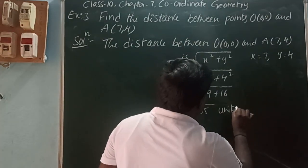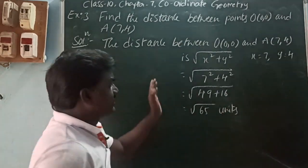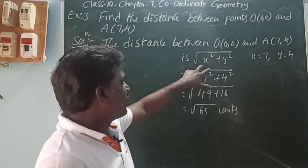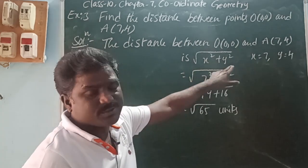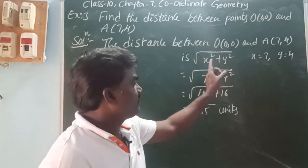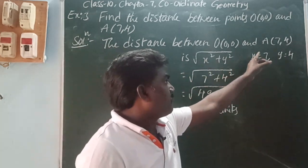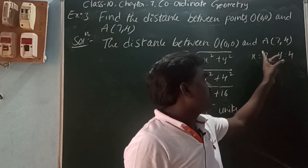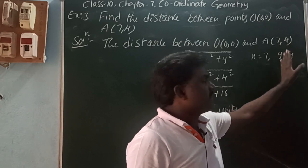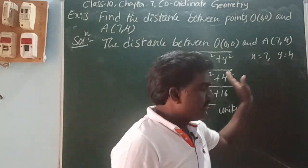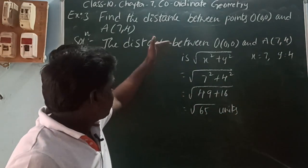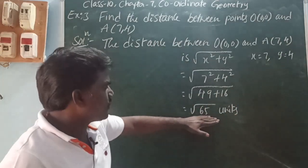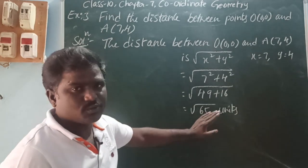So the distance between the origin and the point — the formula is square root of x² plus y². In the point, the x-coordinate is 7 and the y-coordinate is 4. So the distance is square root of 65 units.